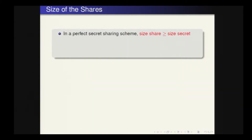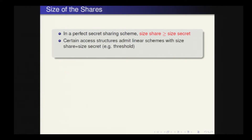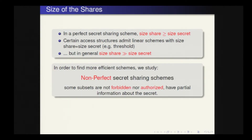In a perfect secret sharing scheme, the size of each share must be greater or equal than the size of the secret. For certain access structures, it is possible to construct linear schemes in which the size of each share equals the size of the secret — for instance, the threshold case. But in general, this will not be satisfied, and by the methods we know, the size of the share will be much bigger than the size of the secret.